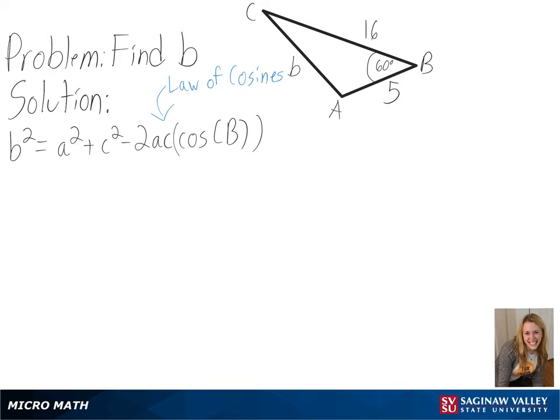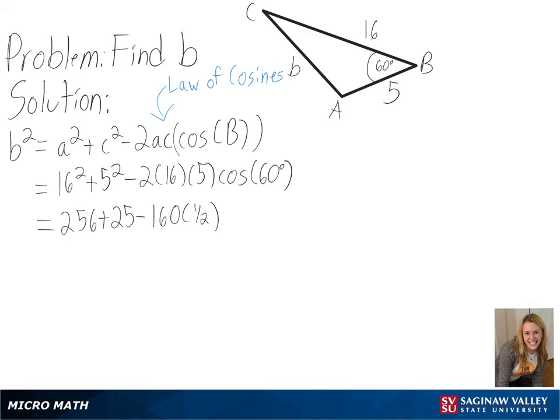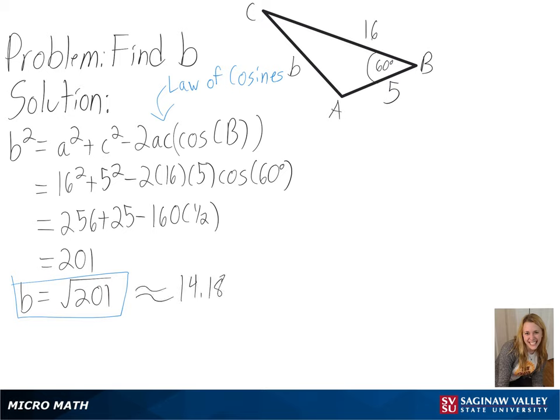So we will first plug in our values and then after simplifying, we will get b squared equals 201, or b is the square root of 201 as our exact answer. We could also approximate this to get around 14.18 as our final answer.